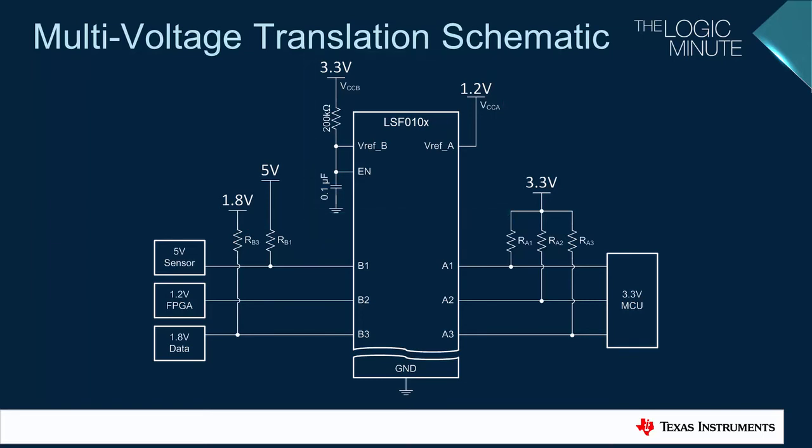The bias circuit must be set up as usual, with the B-supply being at least 0.8 volts higher than the A-supply, a 200 kilo-ohm resistor, and a bypass capacitor on the enable pin. The A-side supply voltage must be the lowest supply voltage used in the system. In this case, that is 1.2 volts for the FPGA communication.